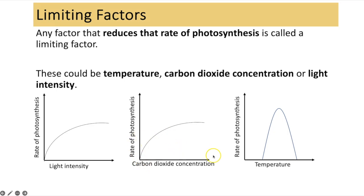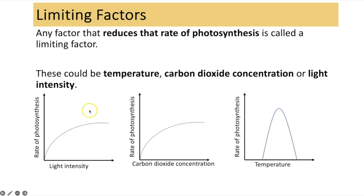Carbon dioxide concentration shows a similar curve. At lower concentrations it is limiting the rate, showing a directly proportional relationship, because carbon dioxide is required to react with ribulose bisphosphate in the Calvin cycle. Again, at higher concentrations the rate plateaus, at which point another factor — light intensity or temperature — must be limiting the rate of photosynthesis.